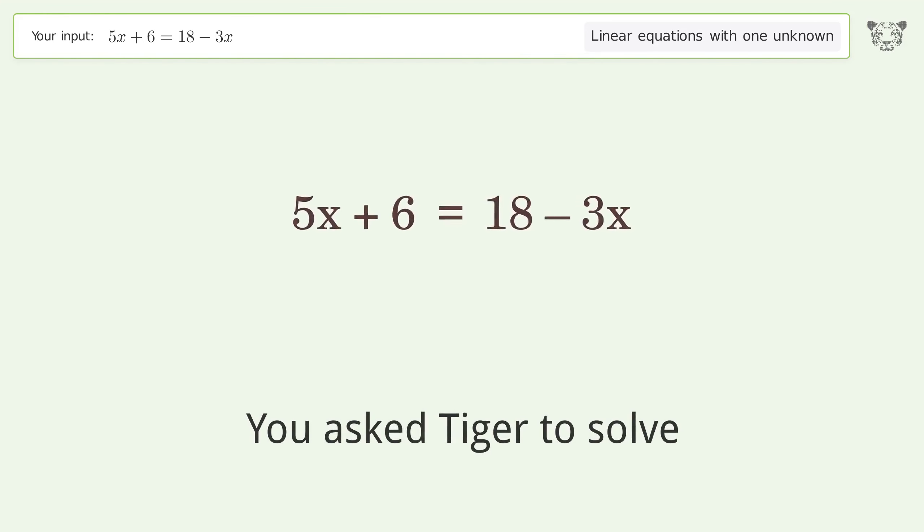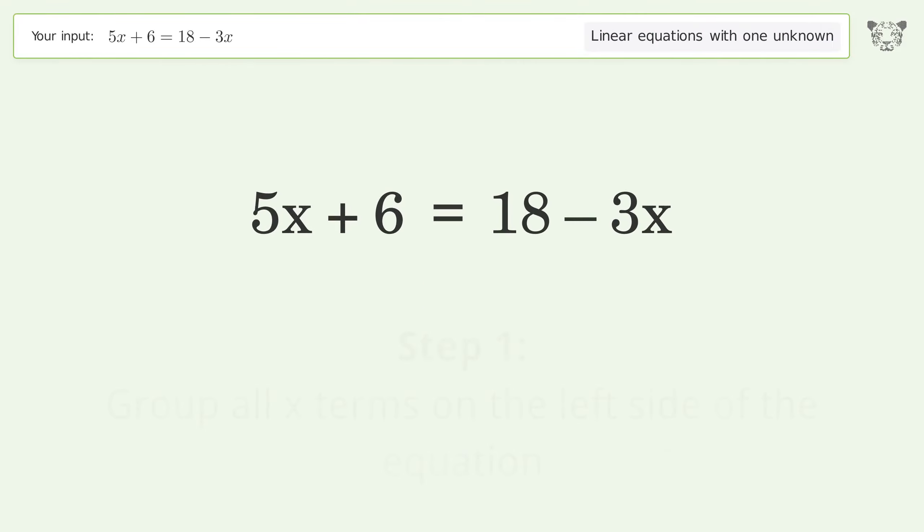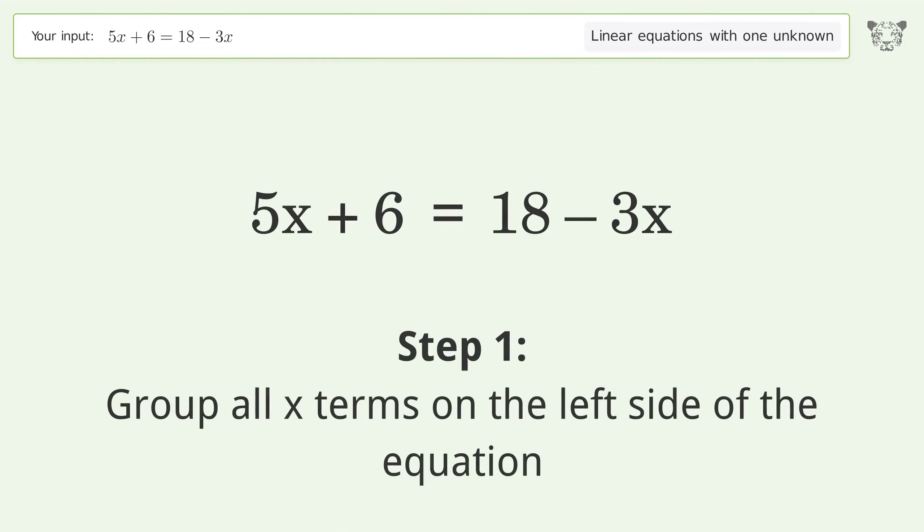You asked Tiger to solve this. This deals with linear equations with one unknown. The final result is x equals 3 over 2. Let's solve it step by step. Group all x terms on the left side of the equation.